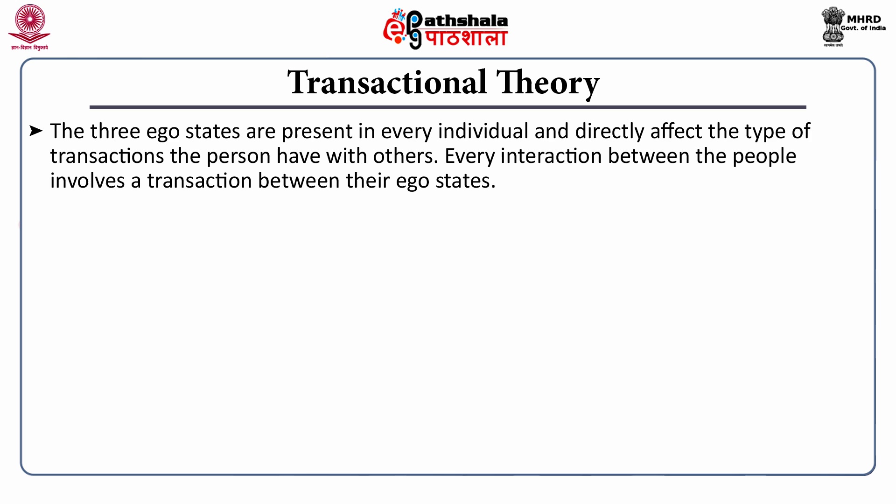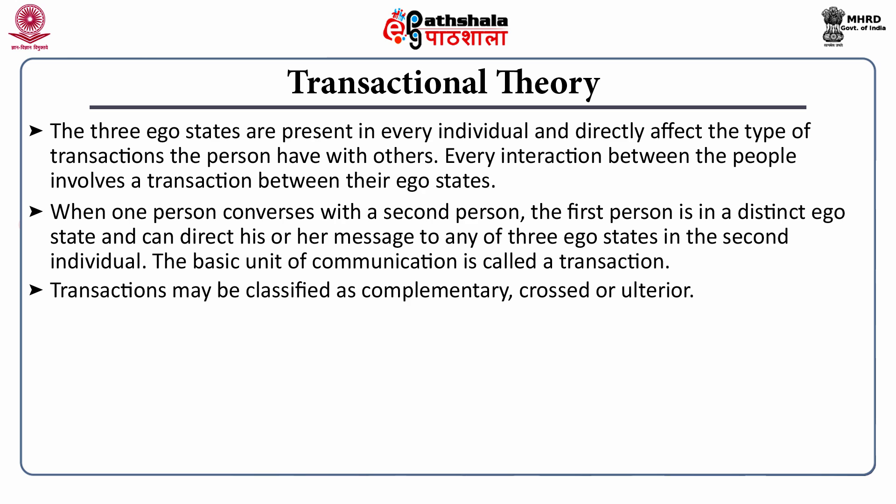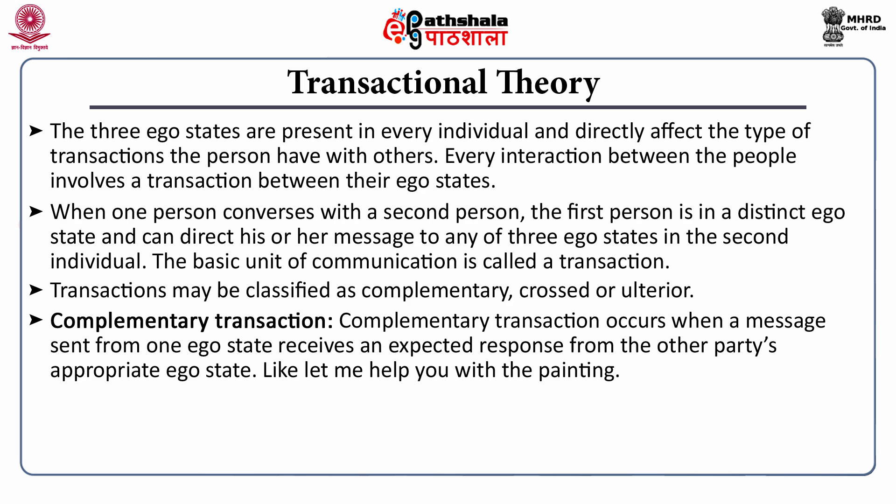Transactional theory. The three ego states are present in every individual and directly affect the type of transactions the person has with others. Every transaction between people involves a transaction between their ego states. When one person converses with another, the first person is in a distinct ego state and can direct his or her message to any of the three ego states in the second individual. A complementary transaction occurs when a message sent from one ego state receives an expected response from the other party's appropriate ego state – for example, 'Let me help you with the painting.'